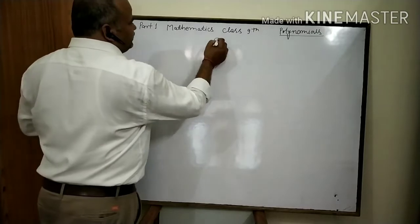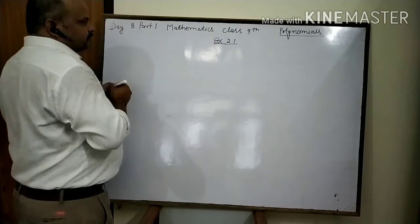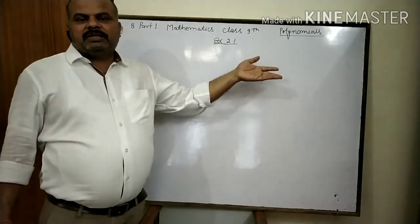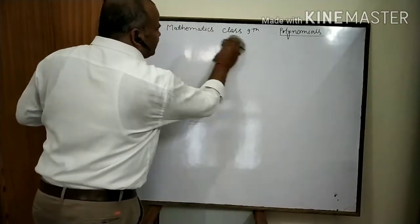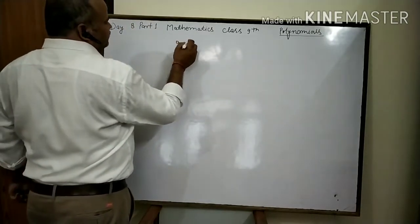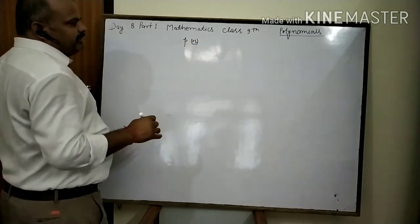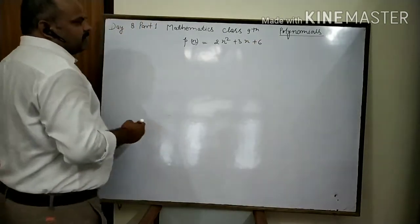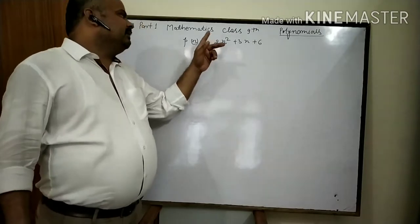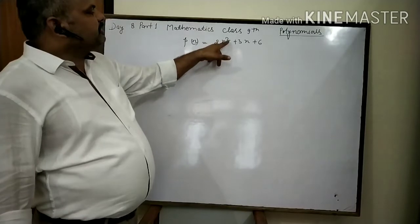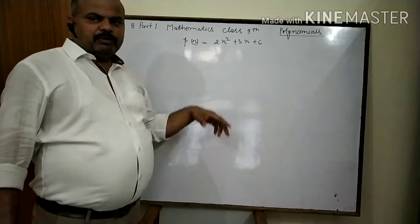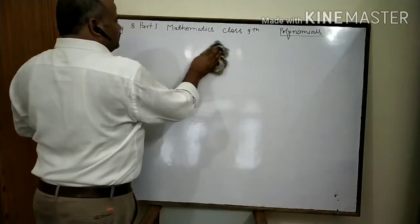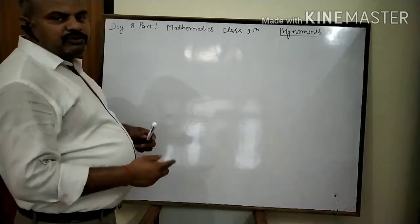Here in Exercise 2.1, you need to identify which expression is a polynomial and which one is not. First of all, we need to know what is a polynomial. A polynomial is denoted by P(x). For example, 2x² + 3x + 6 is a polynomial, because the power of the variable is only a positive integer — here both powers of x are positive integers.